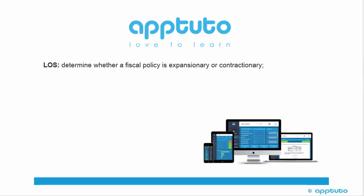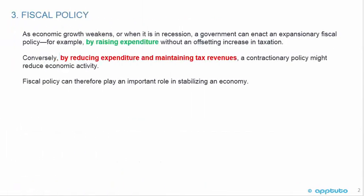This LOS determines whether a fiscal policy is expansionary or contractionary. As economic growth weakens or when it is in recession, a government can enact an expansionary fiscal policy — for example, by raising expenditure without an offsetting increase in taxation. Conversely, by reducing expenditure and maintaining tax revenues, a contractionary policy might reduce economic activity. Fiscal policy can therefore play an important role in stabilizing an economy.